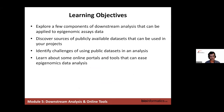The learning objectives for this module: first, we'll explore components of downstream analysis that can be applied to epigenomic assay data. We'll discover sources of publicly available datasets that can be used in your projects — it's one thing to generate a dataset, but to get more meaningful results you often need a very large dataset size, and there are many public sources for genomics and epigenomic data. We'll also cover challenges of using public datasets and learn about online portals and tools that ease epigenomic data analysis.